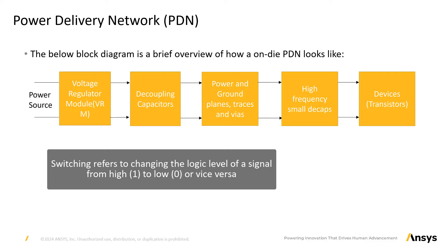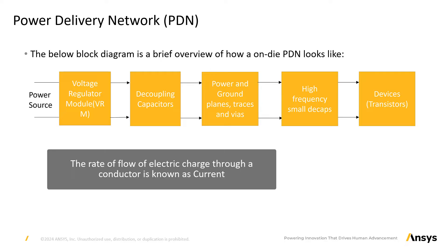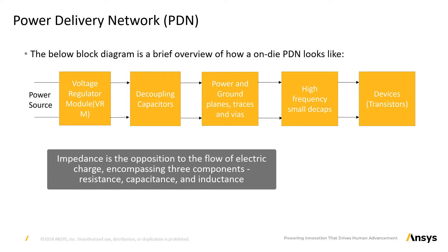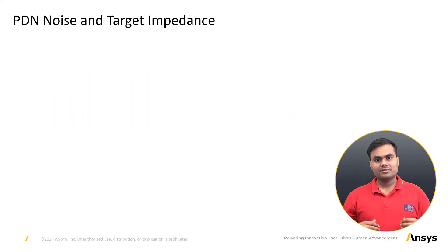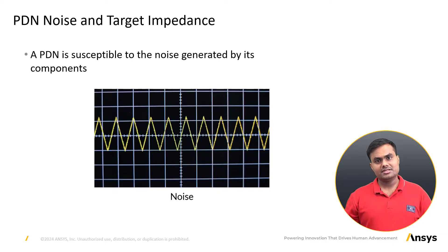Switching refers to the change in logic level of a signal from high to low or vice versa. When switching occurs, the current on a power rail also fluctuates. Current is the rate of flow of electrical charge through a conductor. Impedance is the opposition to the flow of electrical charge, indicating three components: resistance, capacitance, and inductance. A capacitor opposes voltage changes across it, while an inductor opposes current changes across it. The PDN has many components connected to it, and these components generate noise.